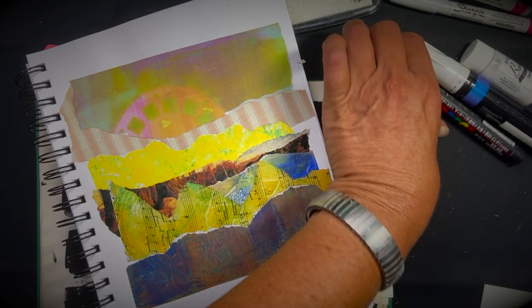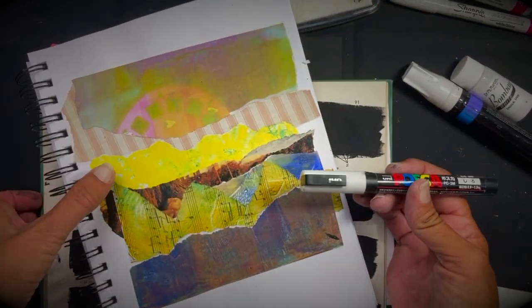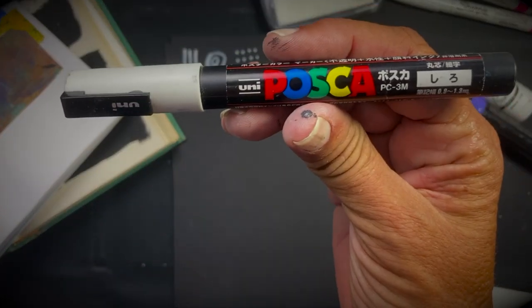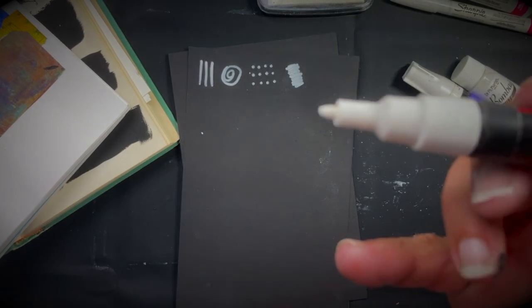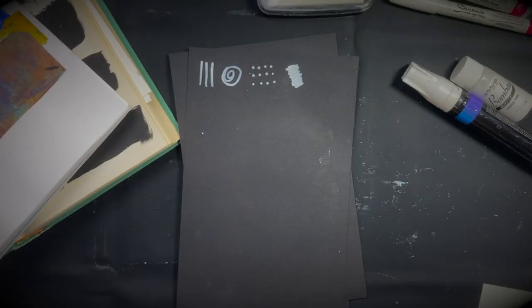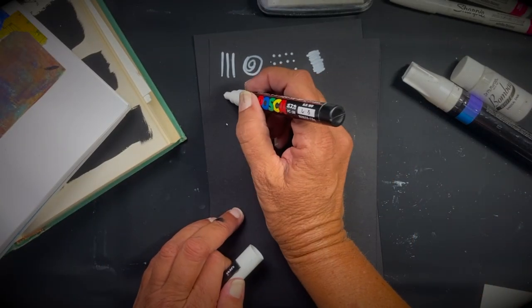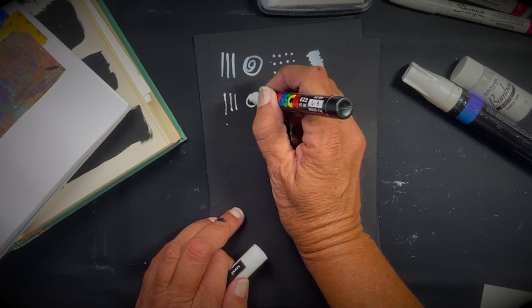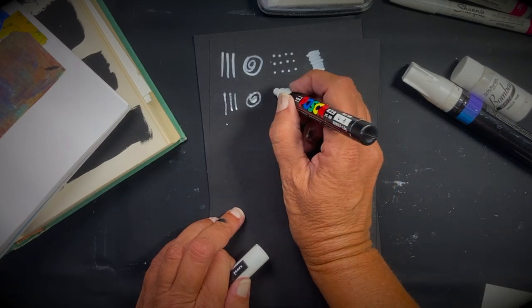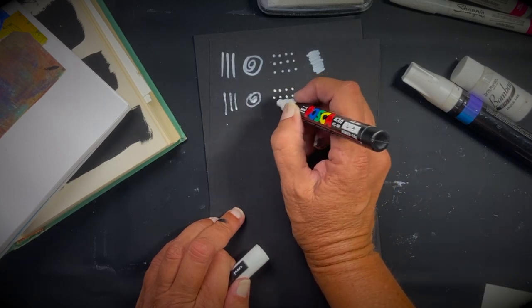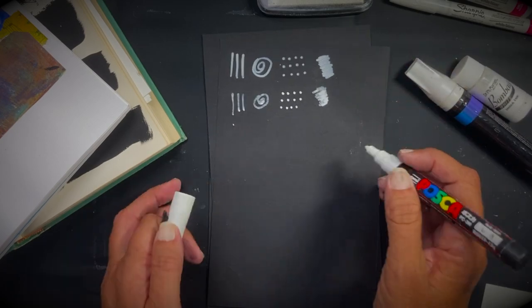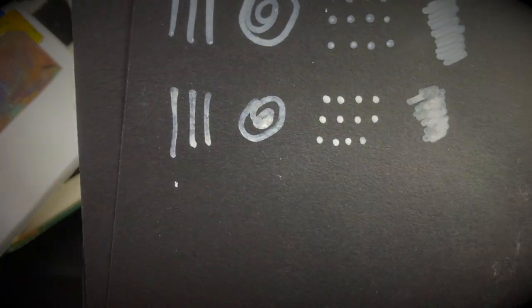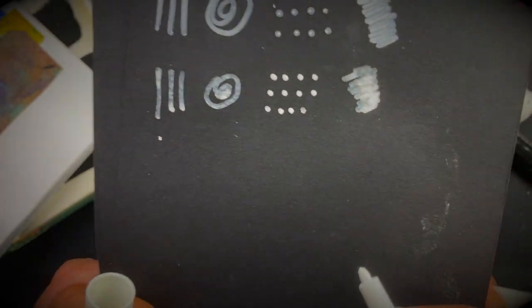And next up, might as well compare the crowd favorite, the Posca paint pen. Now, Posca paint pen, you do need to shake it. You do need to prime your tip, especially when you first get it. You want to press that down until the paint starts flowing. And so this is the Posca paint pen. This you can see is fading. It's kind of being sucked up by the card stock.